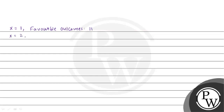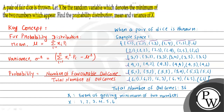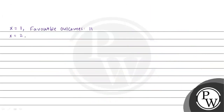Similarly, when X is equal to 2, meaning the minimum of both dice is 2, the favorable outcomes include (2,2), (2,3), (2,4), (2,5), (2,6), (3,2), (4,2), (5,2), and (6,2) — giving a total of 9 possibilities. Therefore, the favorable outcome for X = 2 is 9.